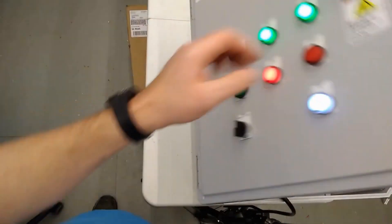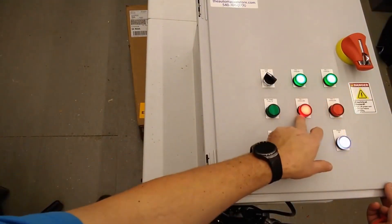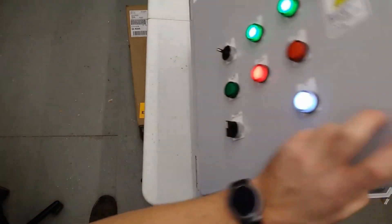Fan 2 pulls in. It's over here. Now we show fan 2 running. Fan 1 has an overload.